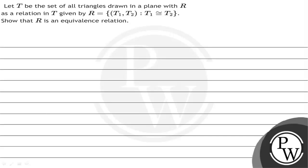Let T be the set of all triangles drawn in the plane, with R as a relation in T given as R = {(t1, t2) : t1 is congruent to t2}. We need to show that relation R is an equivalence relation.